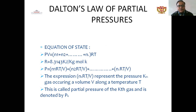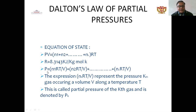PV = mRT when using mass, and PV = nRT when using number of moles. So n1 + n2 + ... + nc multiplied by RT gives the equation of state: PV = nRT. The value of R is 8.3143 kJ per kg-mole per Kelvin. The conditions here allow us to find the pressure of each individual gas.